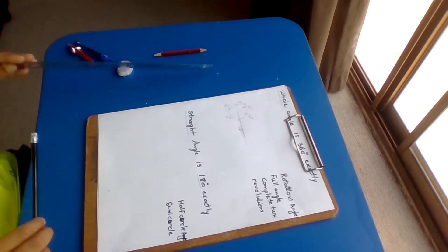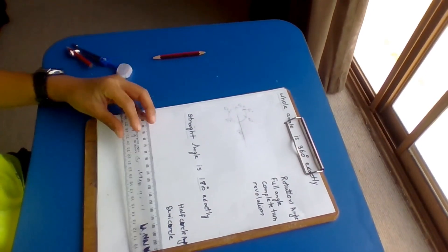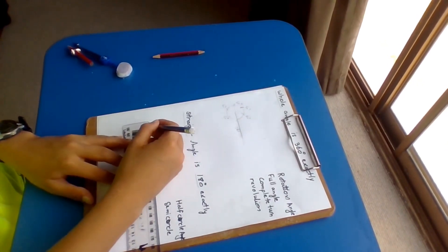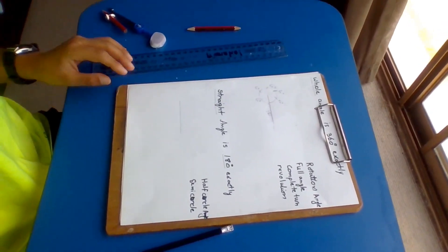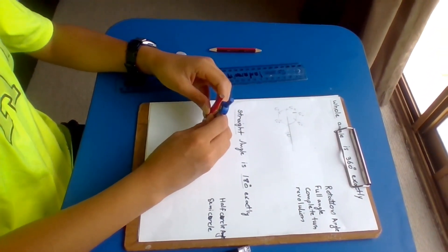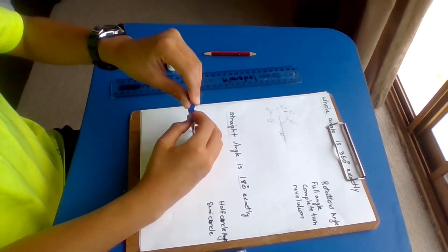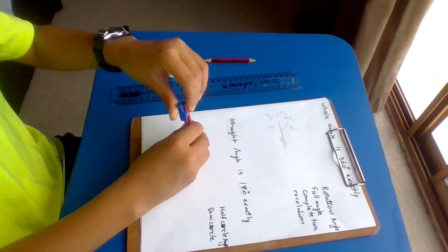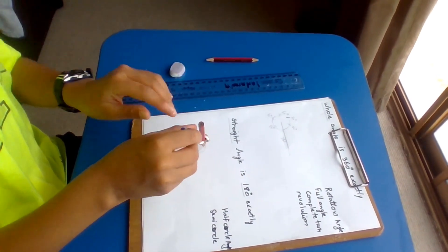The next one I'm going to teach you is the straight angle. It is exactly 180 degrees. Rule the line, adjust the radius of your compass, and draw a half circle. Once I've done that, you want to draw an arc.